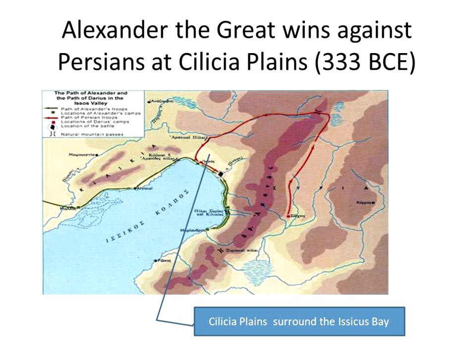Let's start with something you may have seen as part of the history for Paul's second missionary journey. Alexander the Great wins against the Persians in the Cilician plains — the plains between Tarsus and Antioch. His troops come in from the north through Asia Minor, down through the Tarsus Gate, fight the Persians in the plains, and then go on to Antioch.